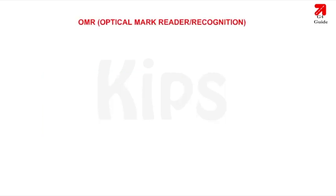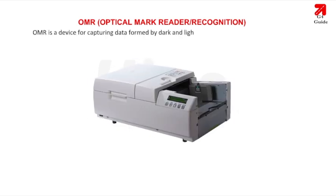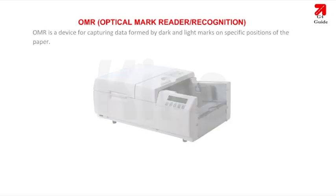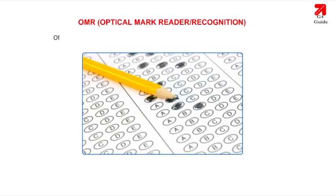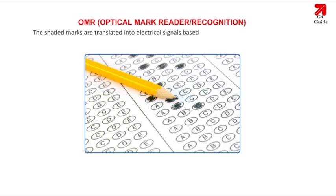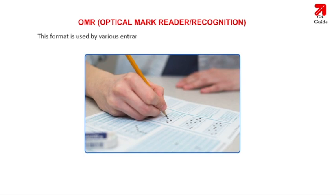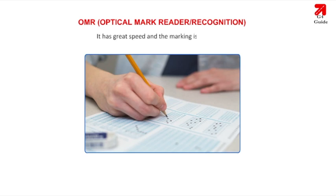OMR (Optical Mark Reader/Recognition) is a device for capturing data formed by dark and light marks on specific positions on paper. It is a special device that can detect marks made with ink or pencil, and requires specially printed paper with boxes or circles for shading. The shaded marks are translated into electrical signals based on the presence or absence of marks. This format is used by entrance examinations for marking objective type questions, and the answer sheets are inserted into OMR for calculating scores. It has great speed and error-free marking.